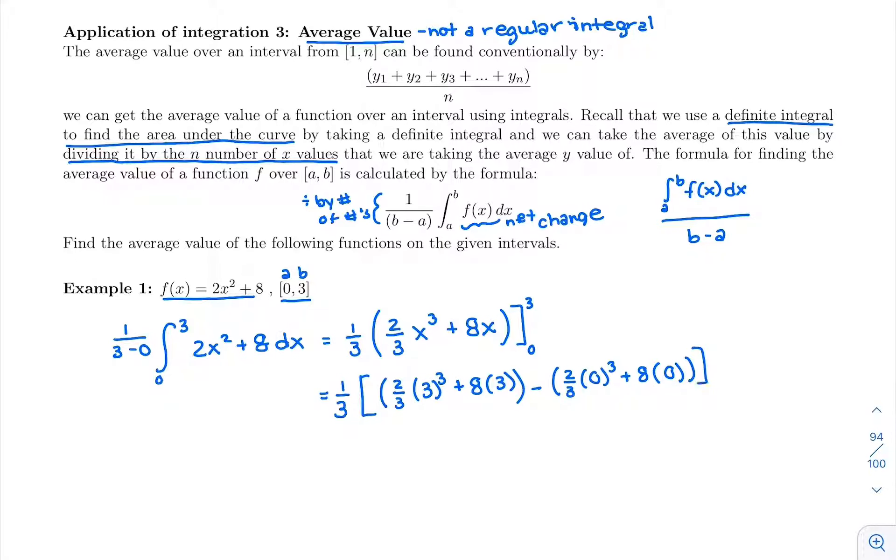That's kind of nice because plugging in that whole lower bound we just get 0. So we have one third of—two thirds of 3³ would be 18 plus 8 times 3 is 24. So two thirds times 27 plus 8 times 3 ends up just being 42.